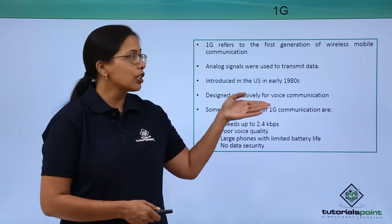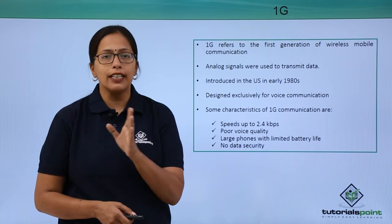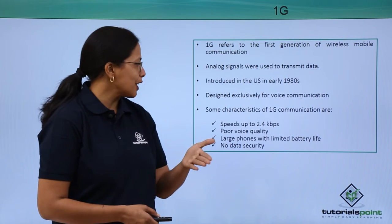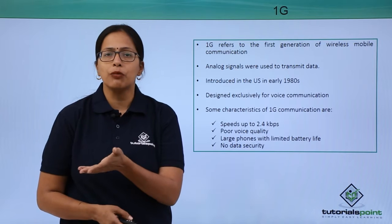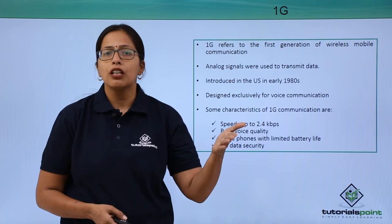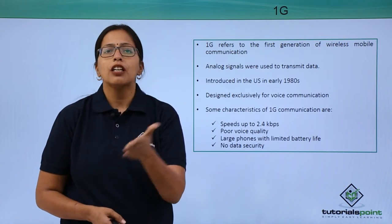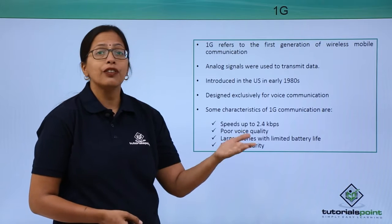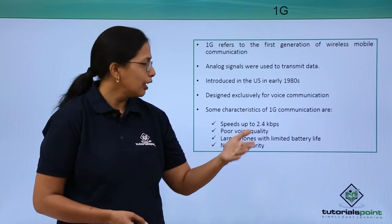1G, or the first generation, was introduced in the early 1980s in the US. It used analog signals for transmission and it was designed exclusively for voice communication. At that point of time, telephones were the only mode of communication. Voice was the first mode of communication on computer networks — videos and audios had not yet made their impact.